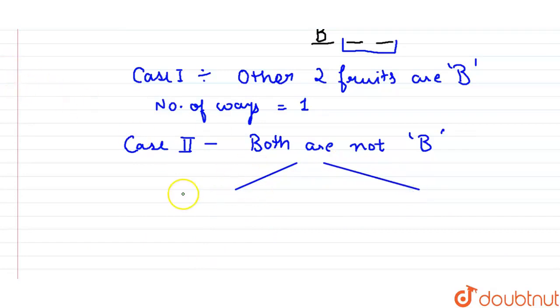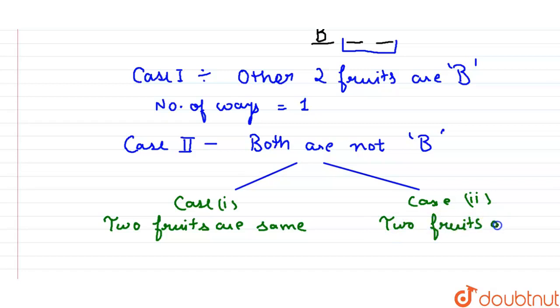So our Case 1 will be the two fruits are alike, or you can say two fruits are same. And Case 2: When two fruits are different.